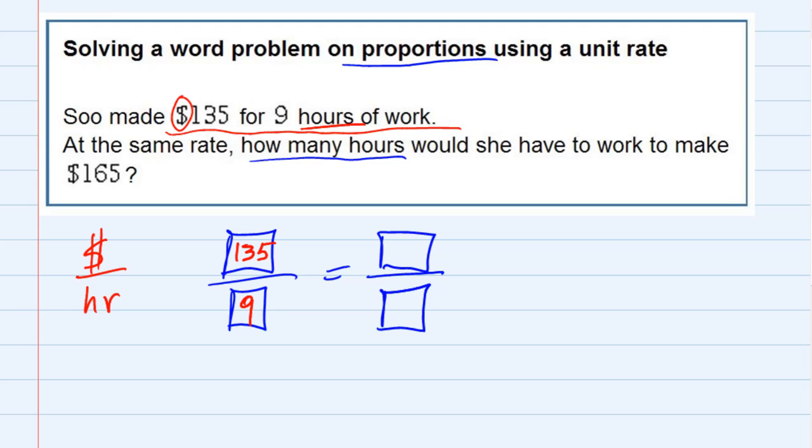And we're told that she'll work, she'll make money at the same rate. How many hours would she have to work? So I don't know hours. And since I've got hours in the bottom, I don't know hours, I'm going to call that X. In the top, we're told that the money is $165. So $165 is in the top, the X which we don't know is in the bottom.